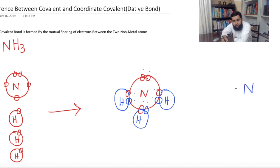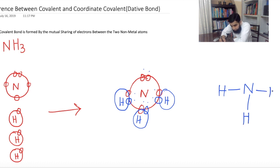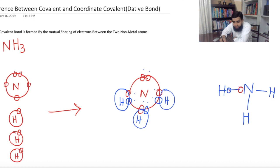So there are three single covalent bonds in NH3. For a single covalent bond, two electrons are shared between the two atoms. Mutual sharing means one electron from the hydrogen atom and the other electron from the nitrogen atom — equal contribution from each atom is called mutual sharing.